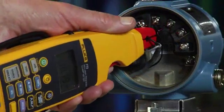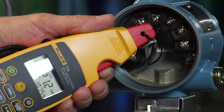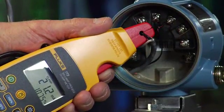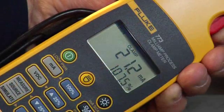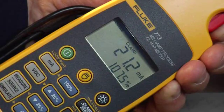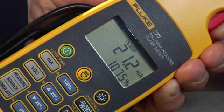First, clip the Fluke 773 onto one of the milliamp signal wires to make the measurement. An indication of 21 milliamp shows that indeed the loop is in alarm and that further troubleshooting is required.